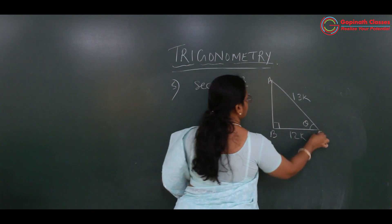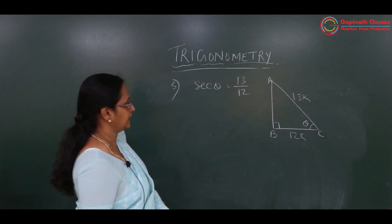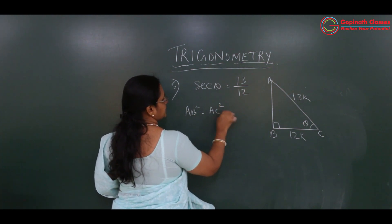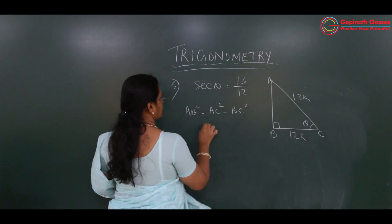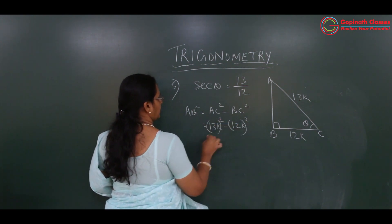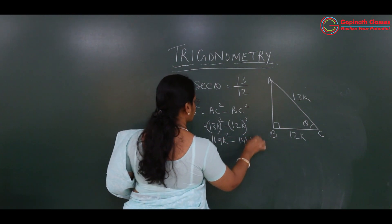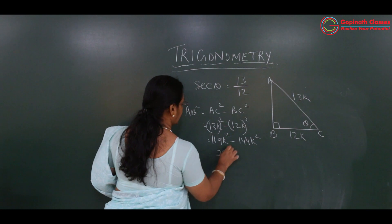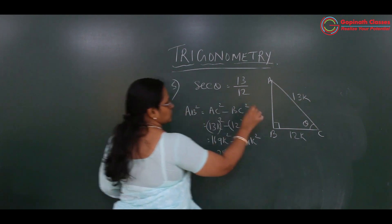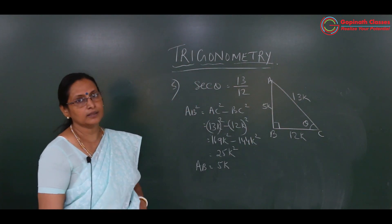Let me name this triangle ABC. So let's find out the third side AB. AB square is nothing but AC square minus BC square, that is 13k square minus 12k square: 169k square minus 144k square, which is 25k square. So AB is equal to 5k. We got the third side as 5k.